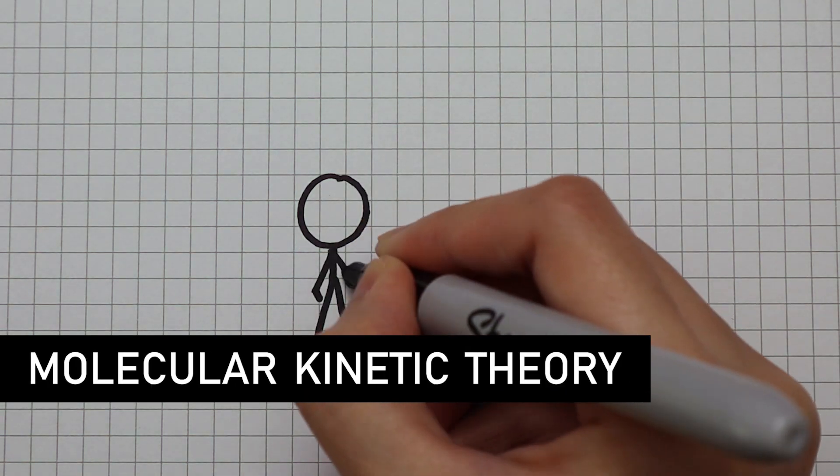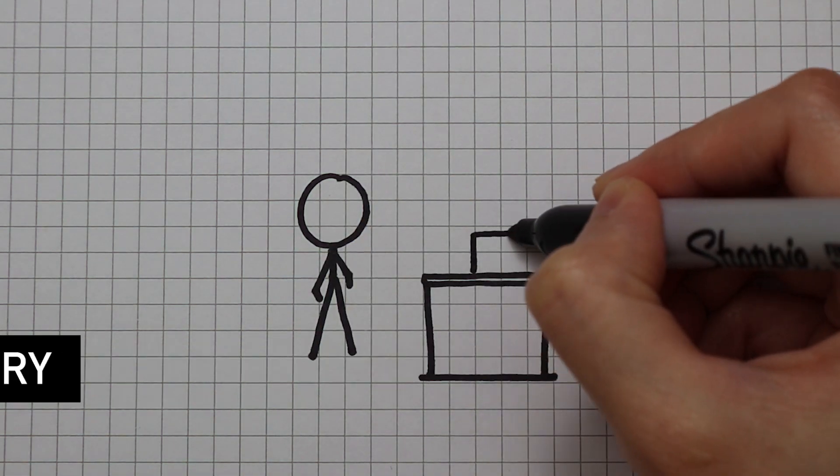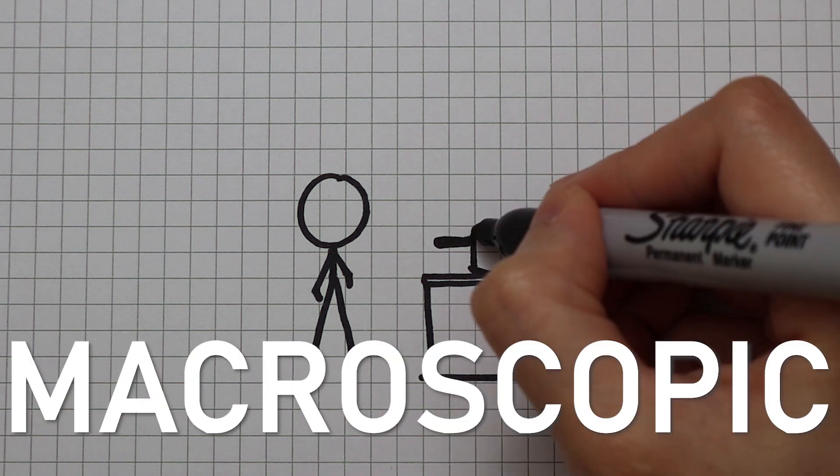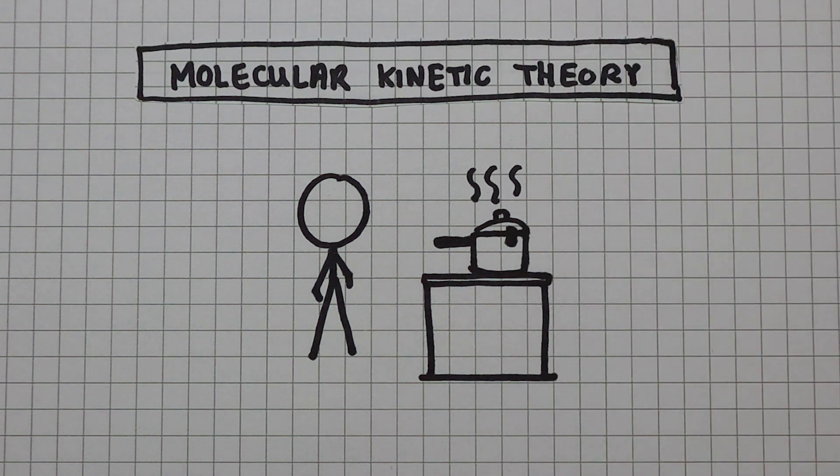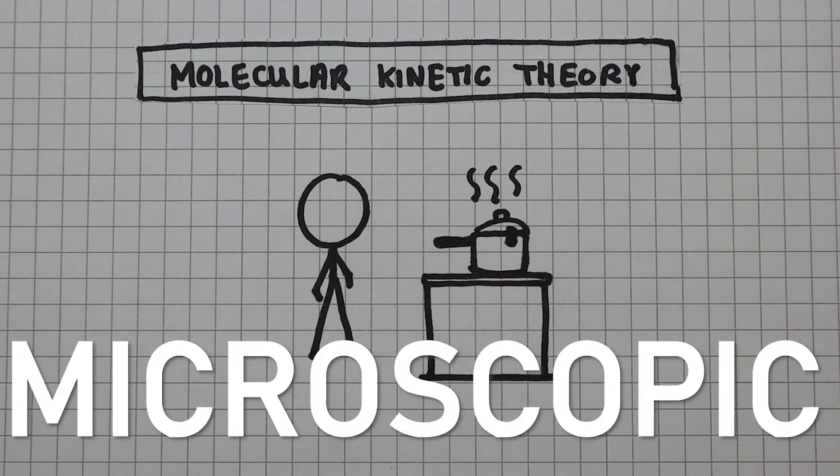A gas in a container exerts a pressure on the walls of the container. That's our macroscopic observation. What's beautiful about molecular kinetic theory is that we can derive an equation for the gas pressure using a microscopic explanation.